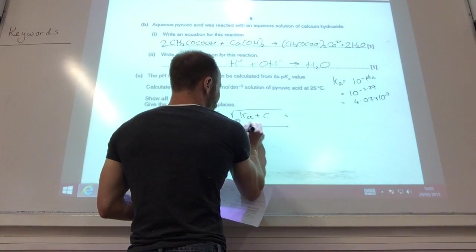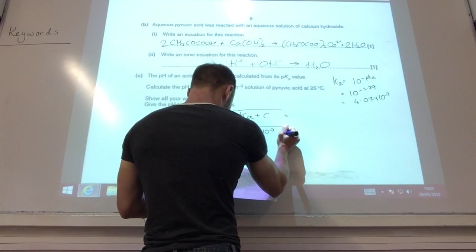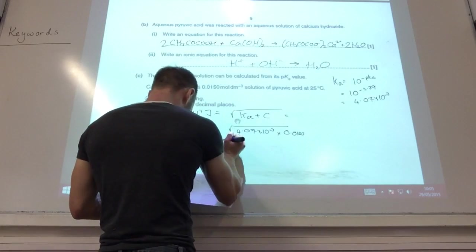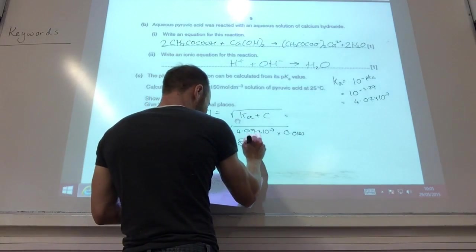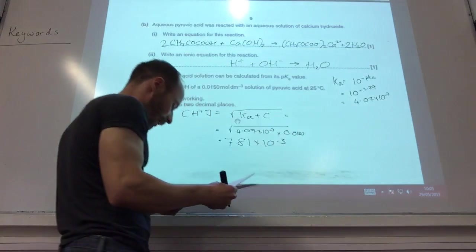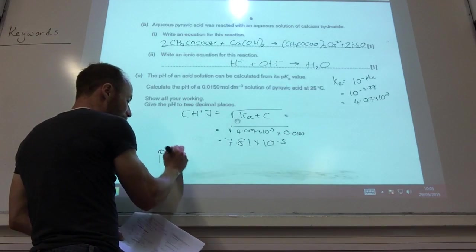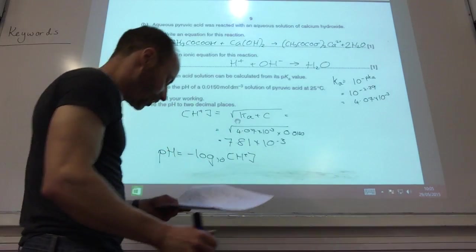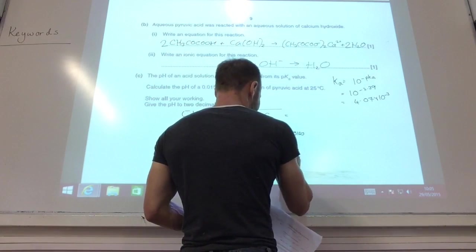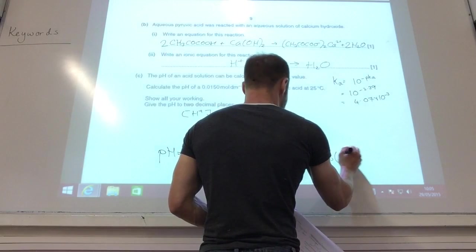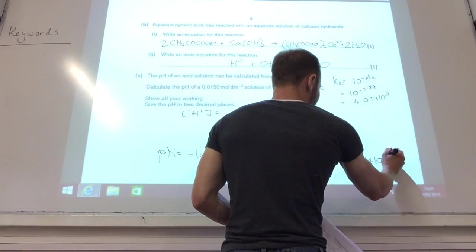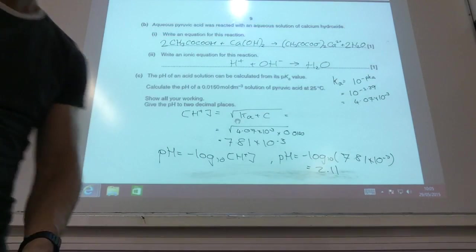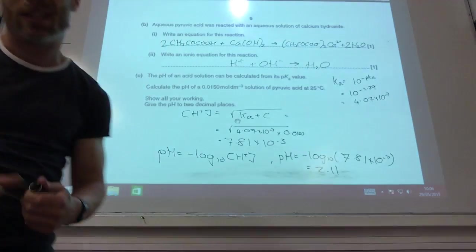I've now got 4.07 times 10 to the minus 3. My concentration they've told me is 0.0150. You do that, and hopefully you get 7.81 times 10 to the minus 3. Then it's just a simple case of finding that in your pH equation. Log it and change the sign. pH equals minus log to the base 10 of 7.81 times 10 to the minus 3, which gives you 2.11. Notice they wanted it to two decimal places, so do that, because it gives you an extra mark.